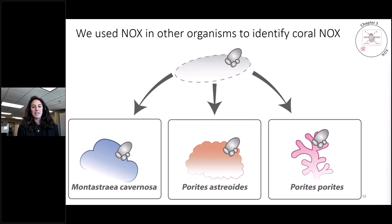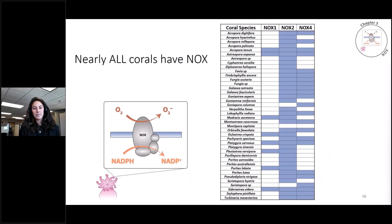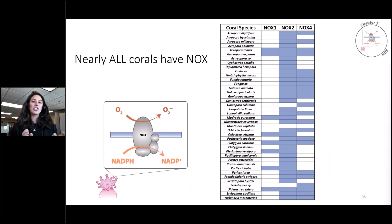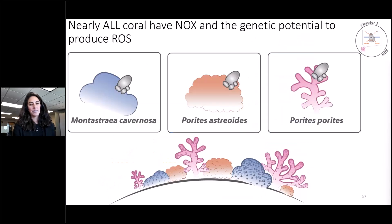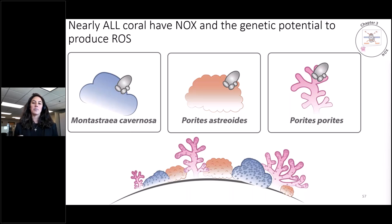We asked the question: do corals have NOX, and if so, what type? To investigate this, I built a bioinformatic pipeline that used conserved NOX sequences from other organisms as references, built profiles of each NOX type, and searched across coral genomes to identify NOX-like coral sequences, verified with BLAST. What we found is that most corals have NOX, with blue squares in the chart indicating NOX presence — many corals have several NOX types, and nearly all of them have NOX. We confirmed that most corals have the genetic potential to produce superoxide.